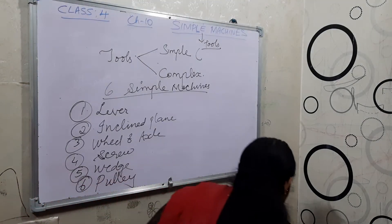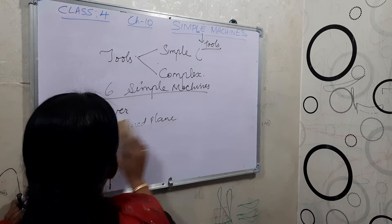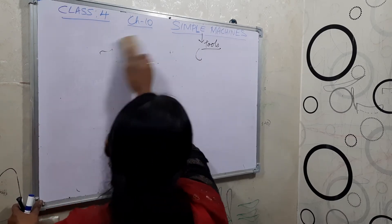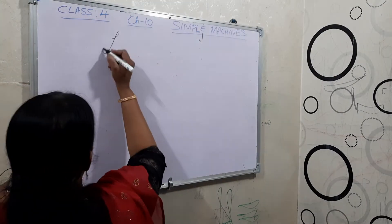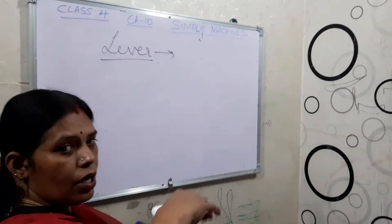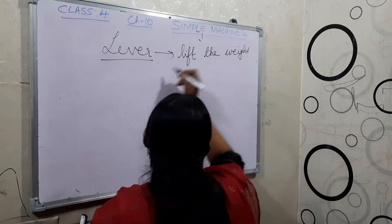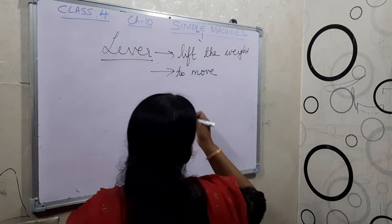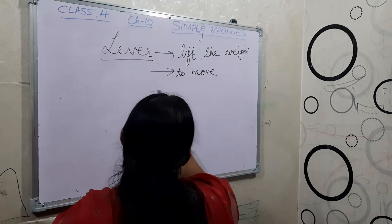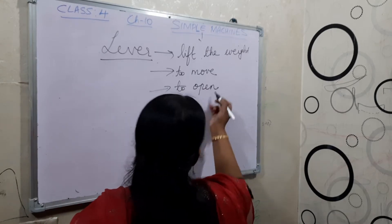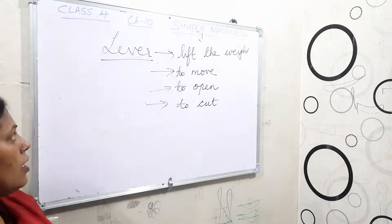Let's explain these simple machines. First, if we are talking about the lever — lever is actually a simple rod. It is a simple rod that helps us to lift the heavy weight. Its uses are: to lift the weight, to move a heavy weight to a different place, to open the things, and to cut the things.